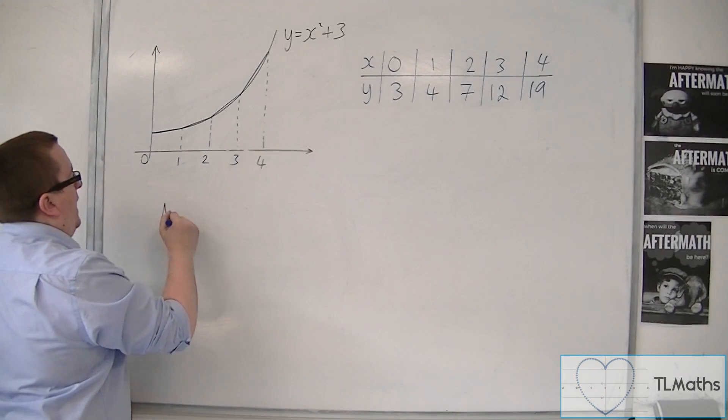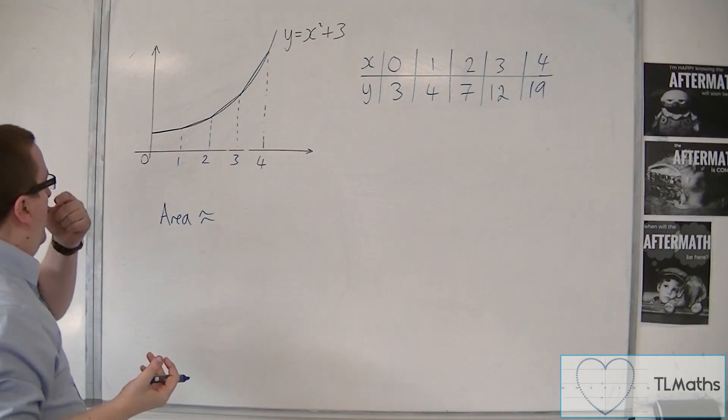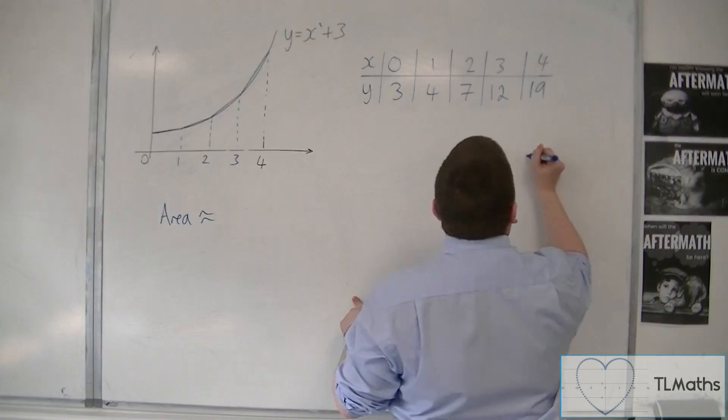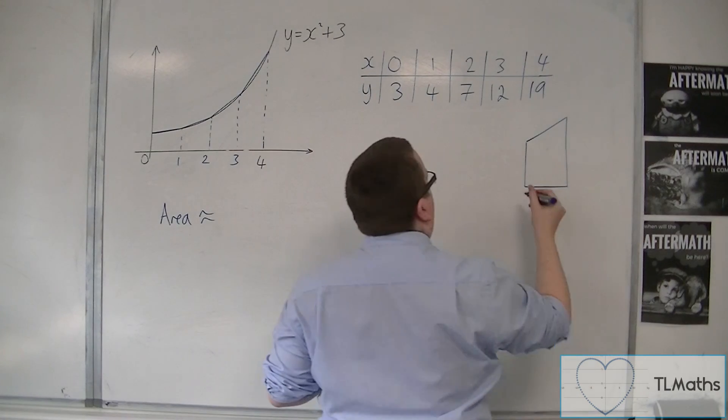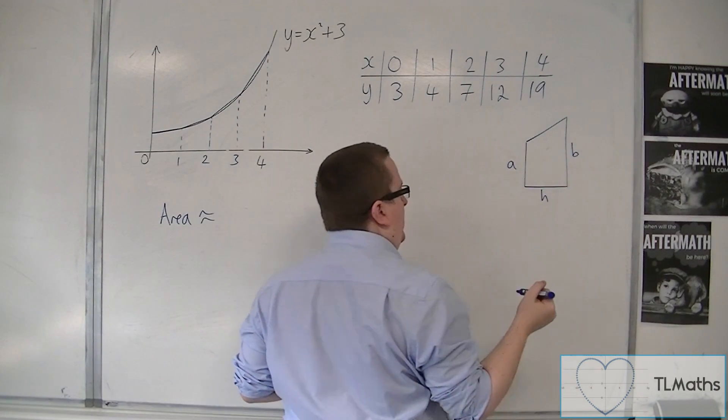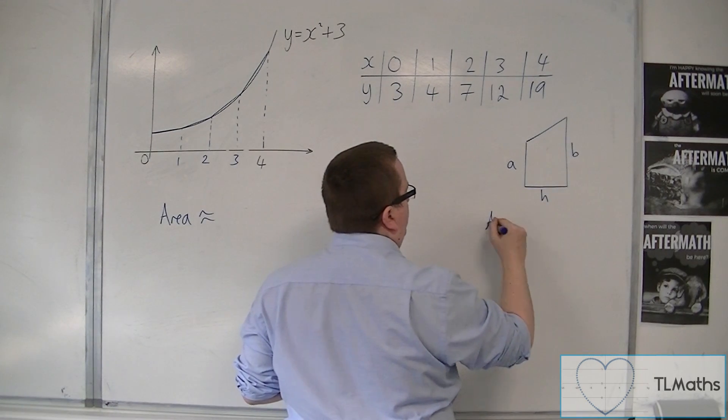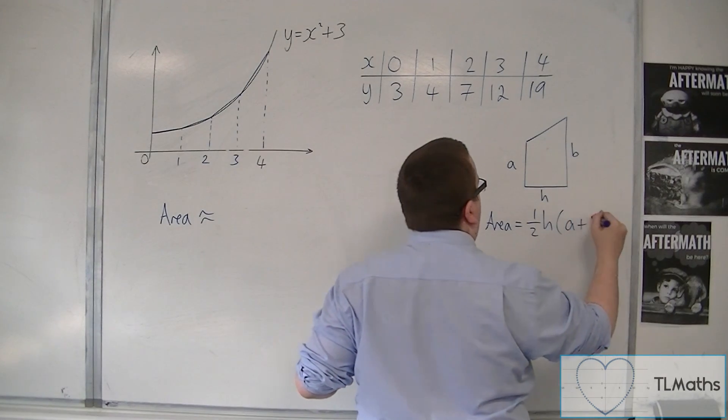But let's see what we get. So the area is approximately the area of a trapezium. If we think back to GCSE, is A, B, and H, for example. So the area of a trapezium is equal to 1 half H times A plus B.